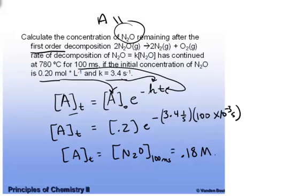Now after you do a calculation like this, you want to ask yourself, does that number make sense? And if you start with 0.2 molar and only a very small fraction of the time passes, and you end up with 0.18 molar, that seems like a legitimate answer for this particular question. So that's an example of using the integrated rate law.